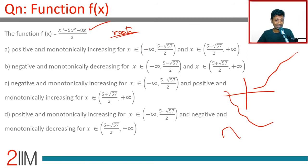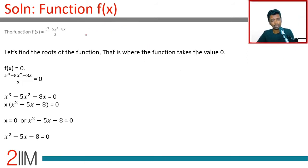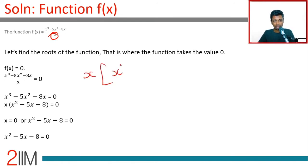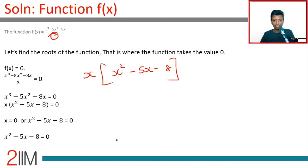Anytime you are given a polynomial, the best starting point is going to be roots. Luckily, one of the roots is zero. So x equal to 0 works. I'm going to factorize this — ignore the divide by 3 for now. This gives us x into x squared minus 5x minus 8. As it turns out, this cannot be factorized directly, so we have to think about completing the square.